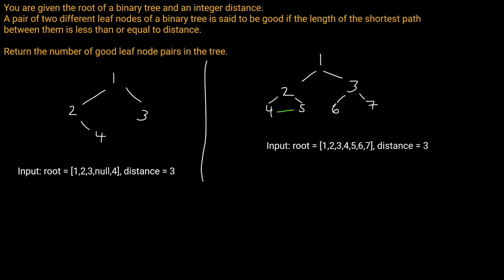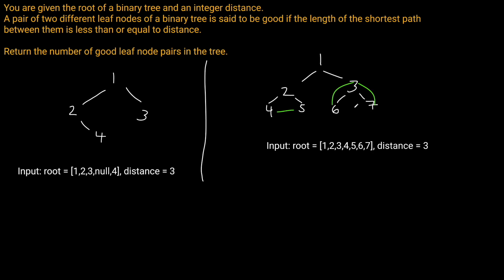We know that 5 and 6 is going to be the same story — distance of 4, so that doesn't work. And we don't want to double count; 4 and 5 is the same as 5 and 4. What we haven't tried is 6 to 7, which is a distance of 2, less than or equal to our distance of 3. So these are also a good leaf pair. In this case we should return 2 for our answer.